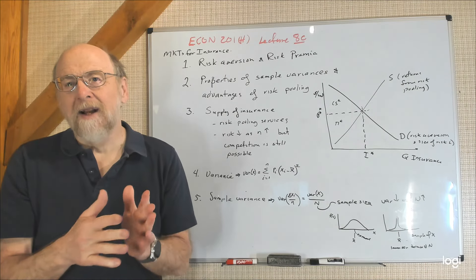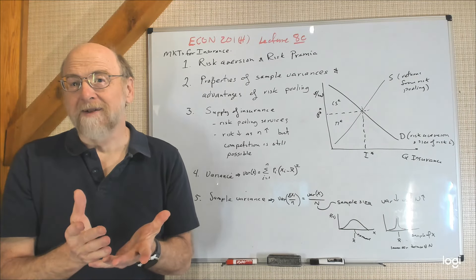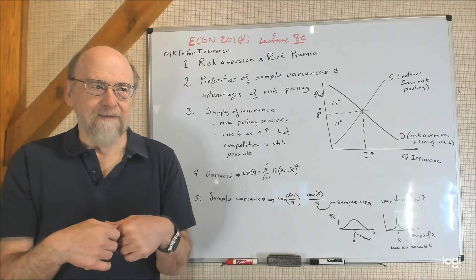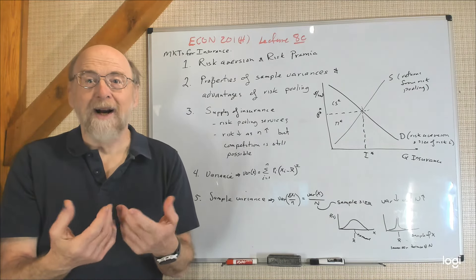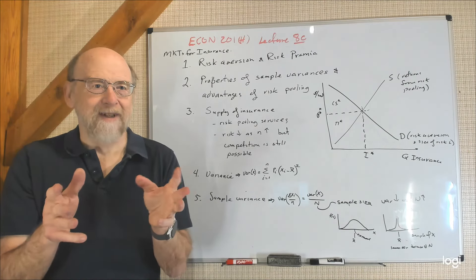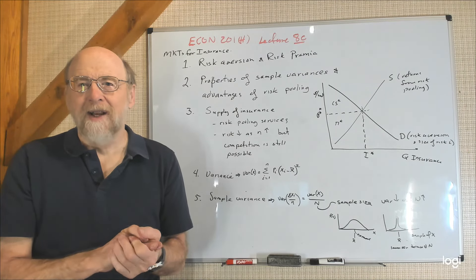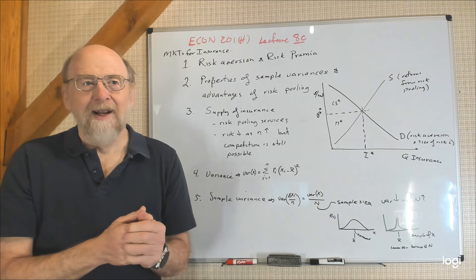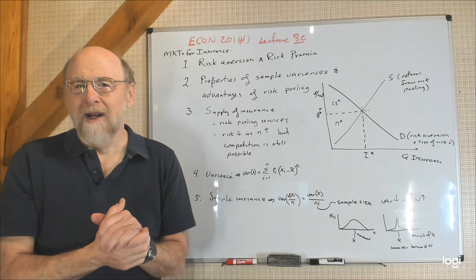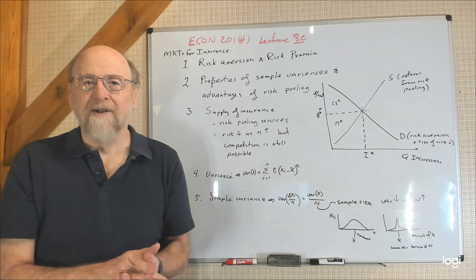Insurance basically eliminates or greatly reduces the loss that one confronts. For example, when you buy house insurance, it will essentially pay for a new house if your house should burn down and also deals with a variety of smaller risks you might face as a homeowner. If you buy car insurance and you wreck the car in a way that's not obviously your fault, the insurance will normally cover the car repairs, fix the car, or replace it according to the policy you have.